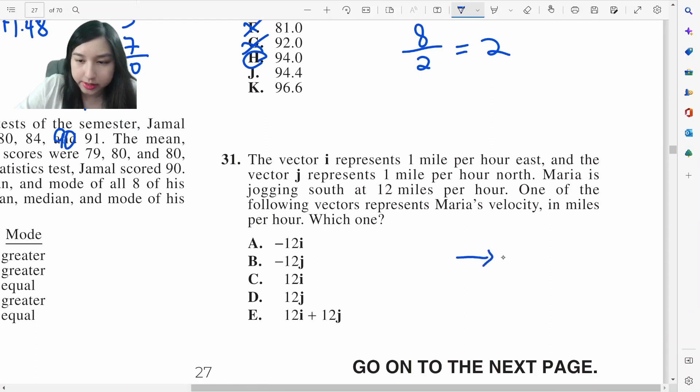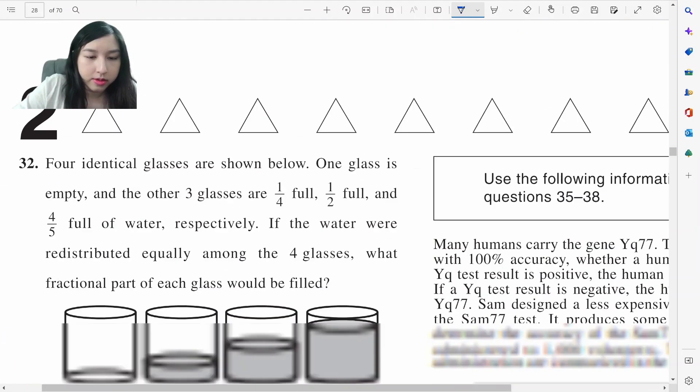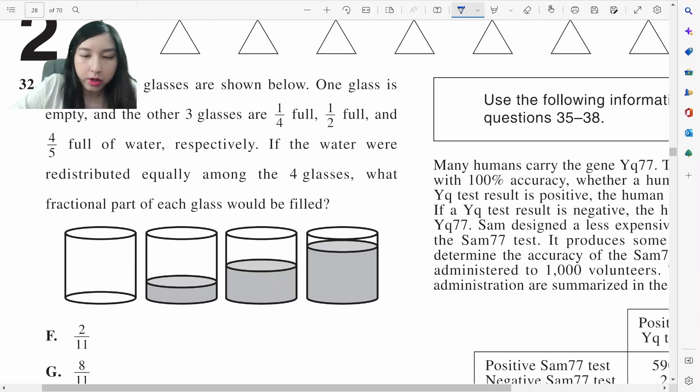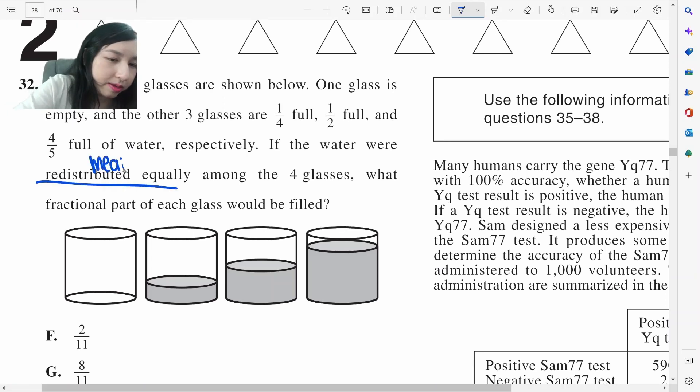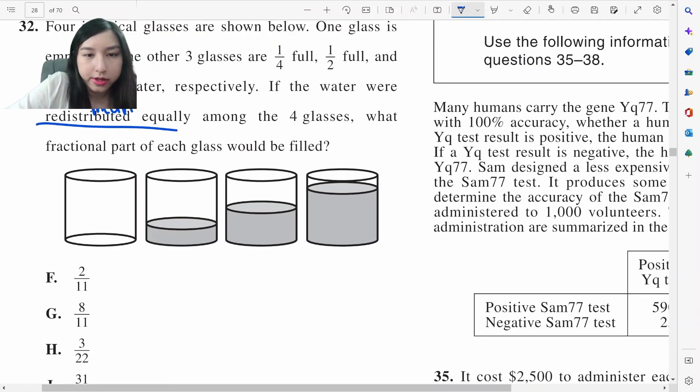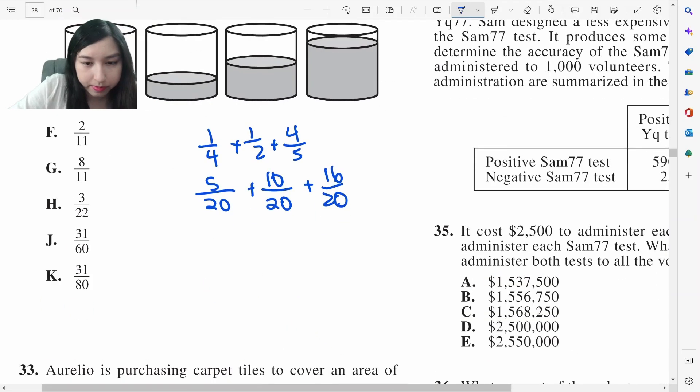I is east, J is north. So we're talking about south by 12. It's going to be negative because it's opposite of J, negative 12J. If the water was redistributed equally, basically we're talking about mean again. What is the fractional part? So we're just going to add all that. 1 fourth plus 1 half plus 4 fifths is going to be 25 20ths plus 10 20ths plus 16, 26, 31 over 20. And if we split it by 4, we need 31 over 80.